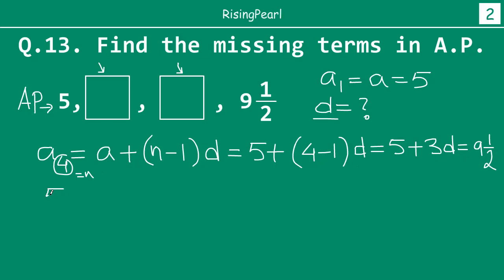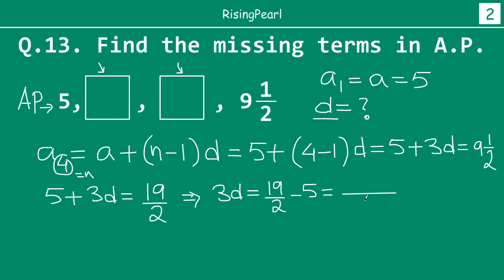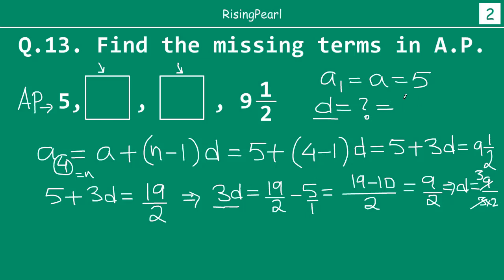Solving the equation: 3d = 19/2 − 5. Converting 5 to halves: 5 = 10/2, so 3d = (19 − 10)/2 = 9/2. Therefore d = 9/(3×2) = 9/6 = 3/2. The common difference d is 3/2.